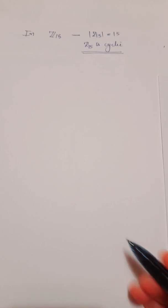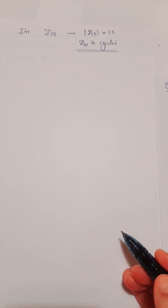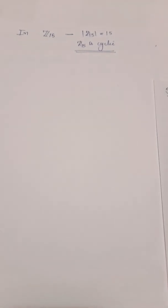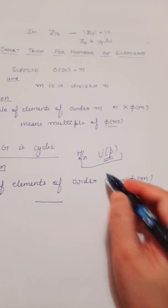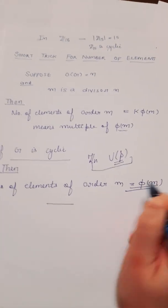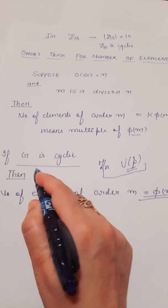The number of elements of order m, where m is a divisor of 15. In a previous video, I told you the trick that the number of elements of order m is equal to phi m when G is a cyclic group.